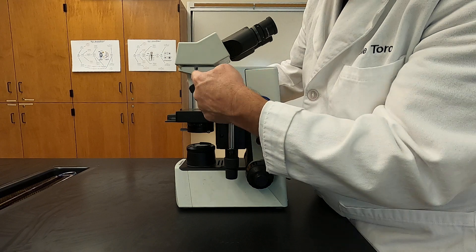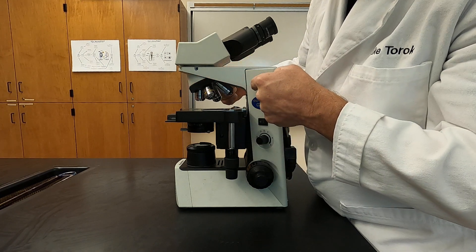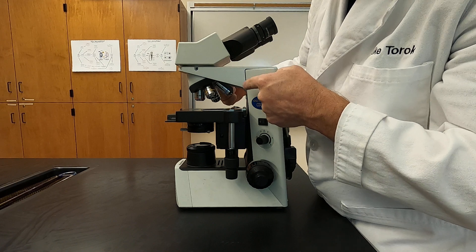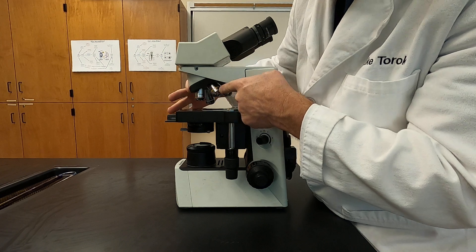Right up here attached to this piece is called a nose piece, sometimes called a turret. On this nose piece, you will notice that there's a number of objective lenses here.